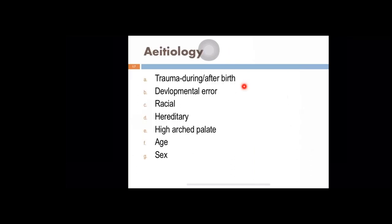The etiology of deviated nasal septum: it can occur due to trauma during or after birth, developmental error, racial differences, hereditary factors, high arched palate. The younger age group are more prone because their septum is more moldable and minimal trauma can change the shape of the septum in later life. Male sex is more prone for deviated nasal septum.